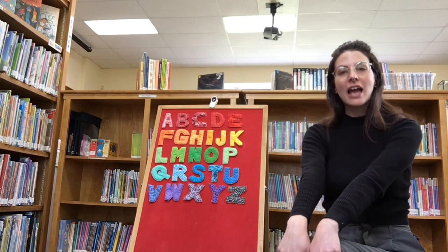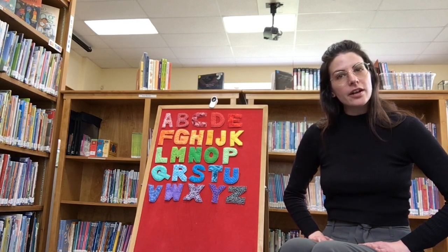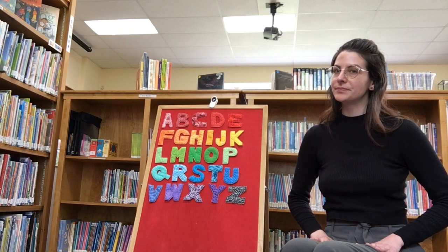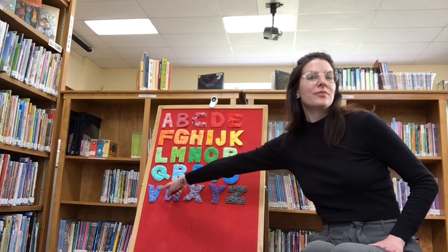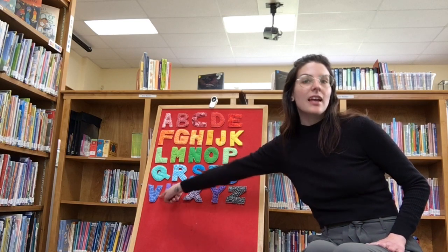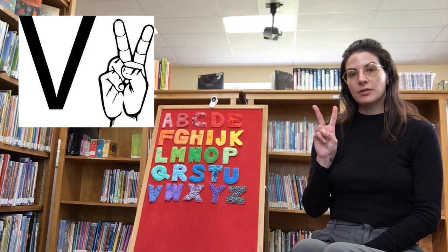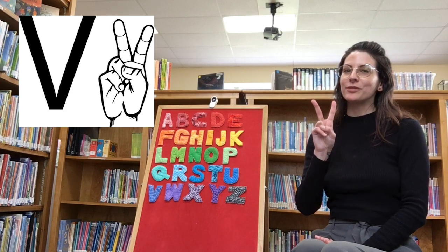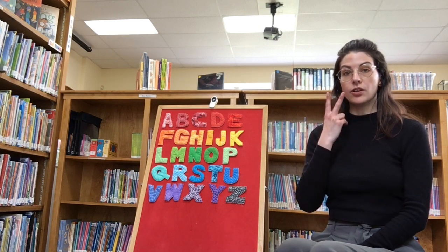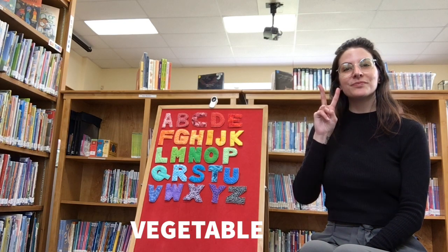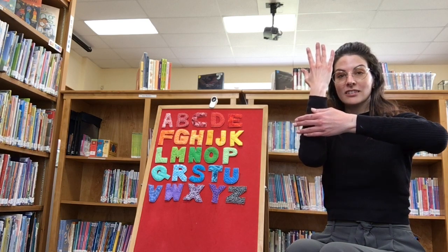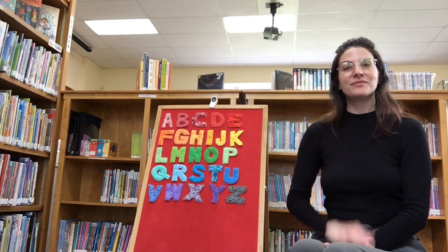Let's learn one more word — how about vegetable? It starts with the letter V. In American Sign Language, we make our letter V by holding out our two fingers and spreading them — do you see how it looks like a V? And the way that you say vegetable in American Sign Language is by taking your V and holding it near your mouth and just turning it. Vegetable. Now you can say garden, flower, and vegetable in American Sign Language.